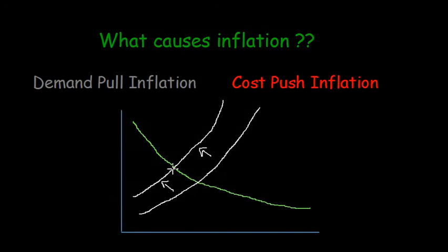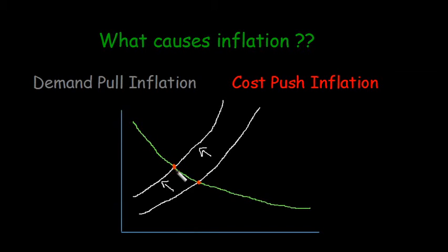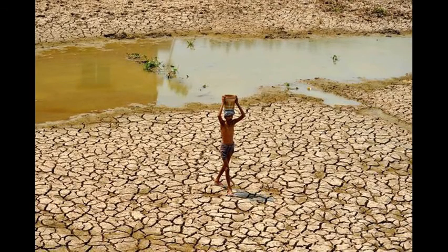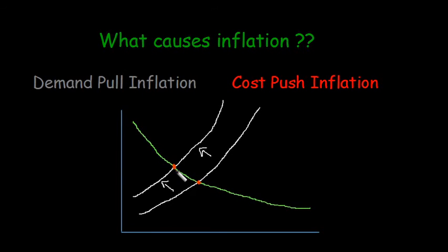Similarly, we have cost-push inflation, where for some reason the supply curve shifts upwards. When the supply curve shifts upwards, we see the prices increasing from this low point to this high point. This increase in prices comes about because of a reduction in supply. For an economy like India, a bad monsoon could cause the supply curve to shift upwards, because it leads to lower production of agricultural produce and therefore lower supply. Anything which shifts the supply curve upwards, causing prices to go up, is called cost-push inflation.